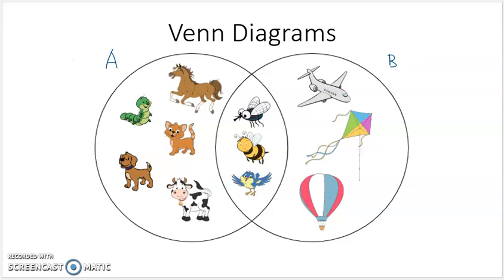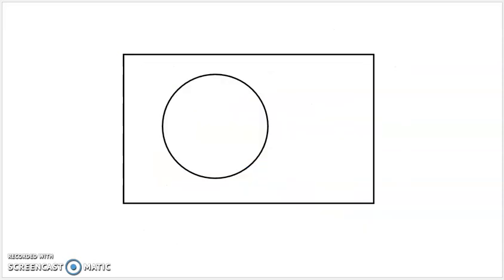For now, let's focus on the basic relationships of Venn diagrams. Venn diagrams often start with a box, and that box is going to represent what's called the universal set, which is often labeled U. The universal set represents the set of all things that we're considering in the problem.